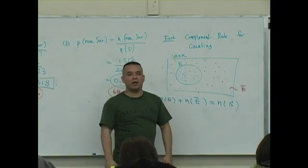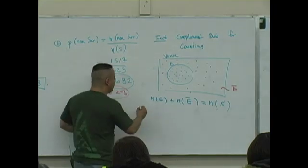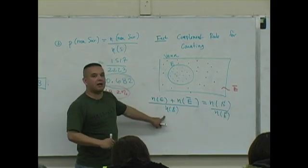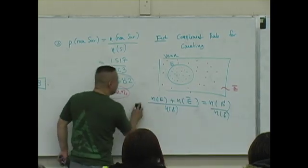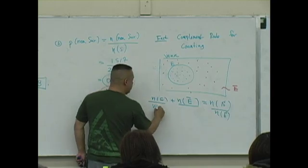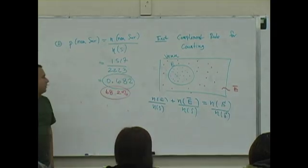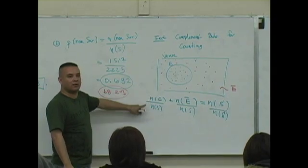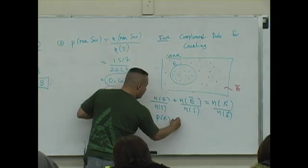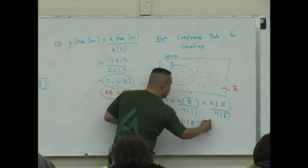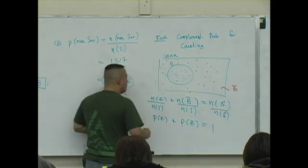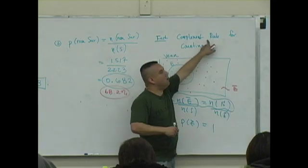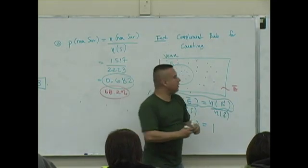Now I'm going to use algebra. I'm going to divide both sides by n of S. So on the left, n of S is dividing the sum of two terms, which means n of S is dividing each individual term. What do you get from this relationship? Do you recognize this definition? This is P of E plus P of E complement. What's n of S divided by n of S? One. So this numerator relationship is the complement rule for counting. I have derived for you the complement rule for probability.